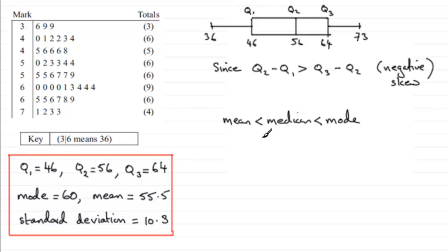And again we can reverse the argument that if the mean is greater than the median is greater than the mode, then you've got positive skew. So that's another way of doing it.